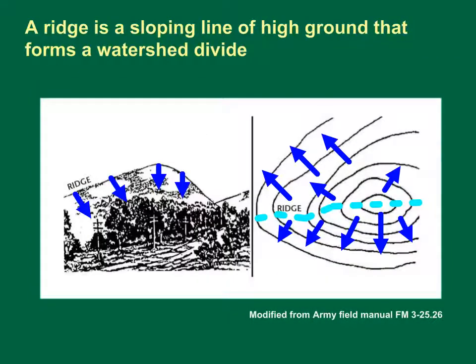A ridge is a sloping line of high ground that forms a watershed divide. These diagrams show a ridge line in landscape view on the left and map view on the right. Think of a ridge line as high ground that runs along a hill. A series of connected hills forms a ridge line.